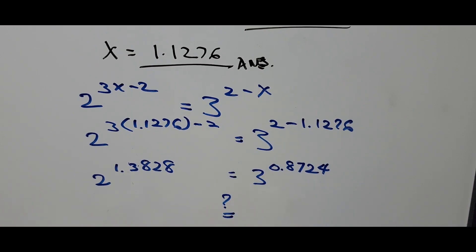Now is the left side of equation equal to the right side of the equation? To calculate, 3 raised to 0.8724 is 2.6076, and 2 raised to 1.3828 is 2.6077.